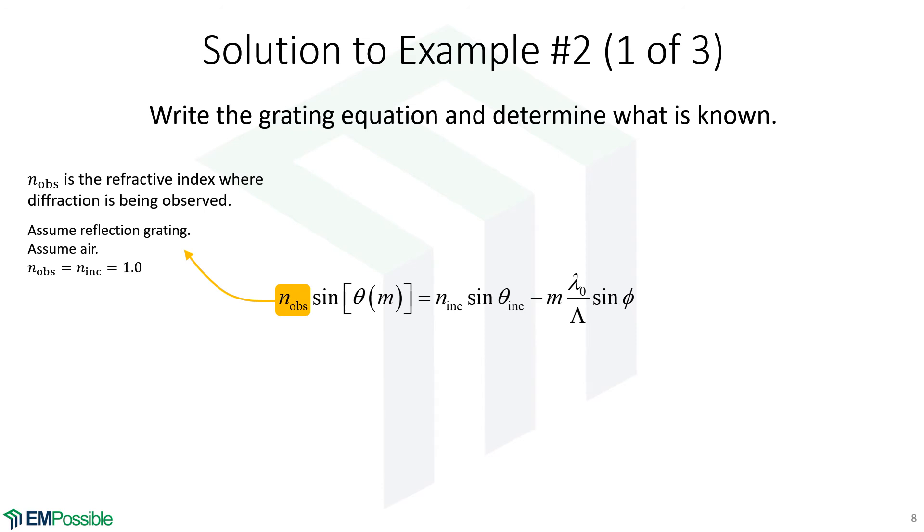Again, not enough information was given, so we have to make some assumptions. So we will assume that this is being used as a reflection grating and it's in air. That means both n observed and n incident will be 1.0.